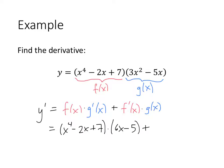Plus, now f prime is the derivative of the f function, that's going to be 4x cubed minus 2, and then finally the g function is the original g that we had, so that's 3x squared minus 5x.